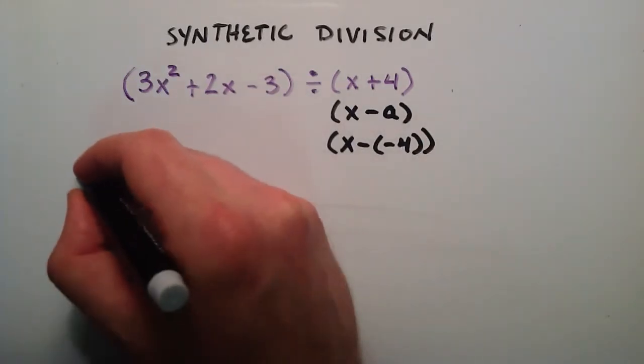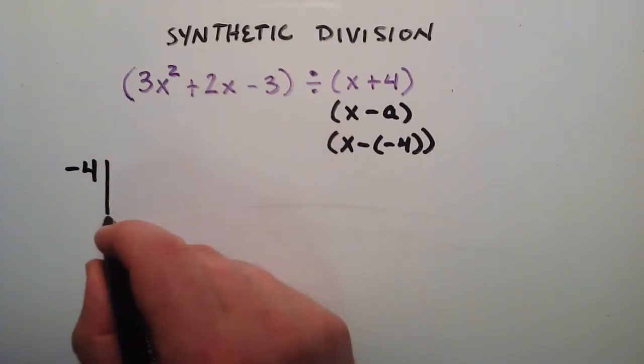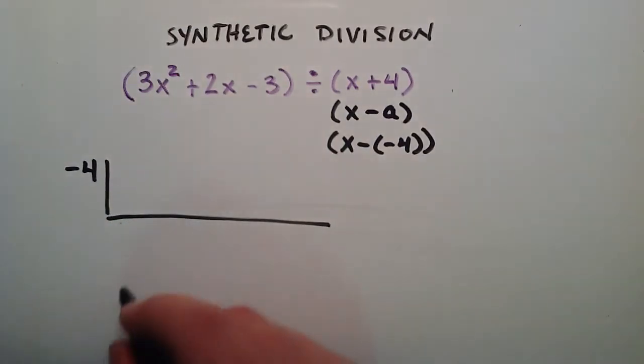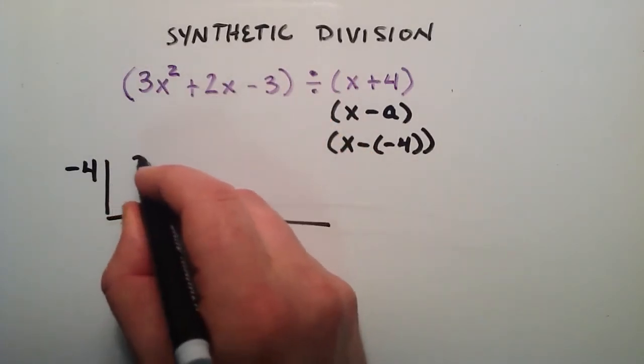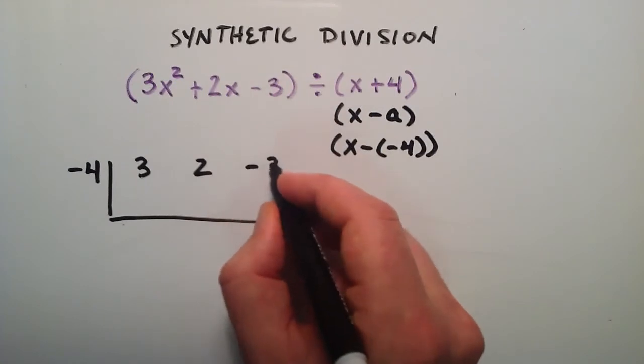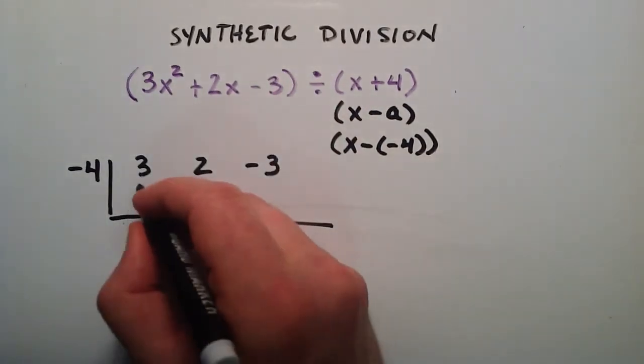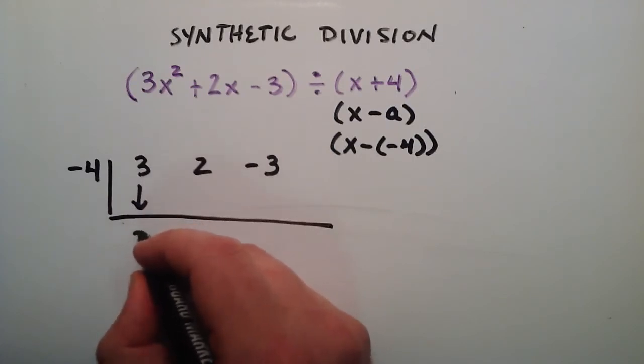What we do is we take our a term, we write it over here, and then we draw this little box type thing here. Then we pull off the coefficients of this polynomial. So we write 3, 2, negative 3. And then we pull down our first coefficient and put it below the line here, so that's 3.